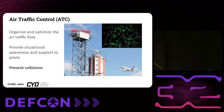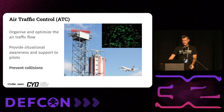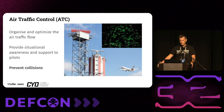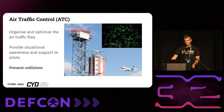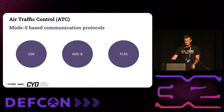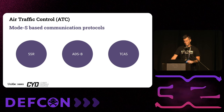Air traffic control is a key infrastructure for safe air travel today with more than 30 million flights per year worldwide. Air traffic management is nowadays a very complex thing. Air traffic control helps organize and optimize the air traffic flow, provides situational awareness to ground controllers and support to pilots, and a very important feature is to prevent mid-air collisions. There are different procedures and technologies for this, and there are mainly three technologies important for air traffic control.